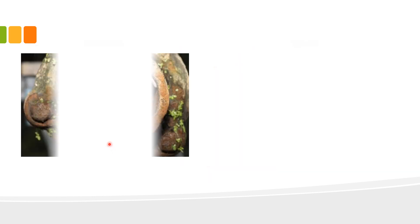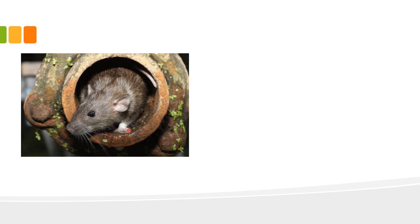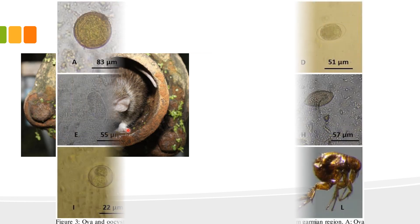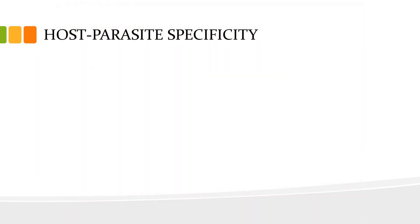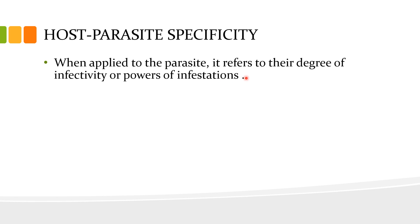Moreover, rats are susceptible to certain parasites of the same species and to different species as well. This video shows the ova and oocysts identified from the intestinal content of the black rat Rattus rattus from the Garmelian region, along with fleas. This is an example of host-parasite specificity viewed from the standpoint of the host — the host is the rat and these are the parasites that can infect or infest rats. Host-parasite specificity applied to the viewpoint of the parasite refers to the degree of infectivity or powers of infestation.